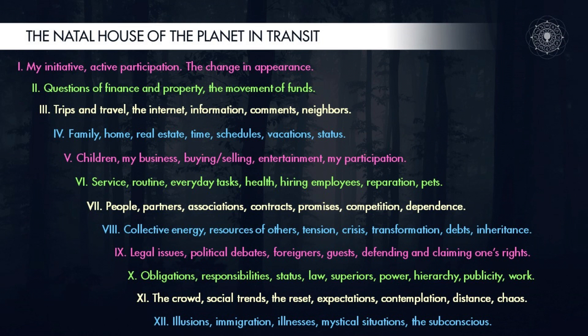What is the difference between participation according to house one and the one according to house five? If house one is the alchemical process of calcination — it requires the direct expenditure of our own energy, requires that I do something concrete — then house five is simply my contribution to something big. This can be any form of contribution without active action. What matters for the fifth is the contribution and not the result.